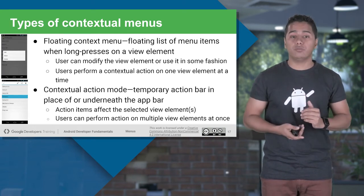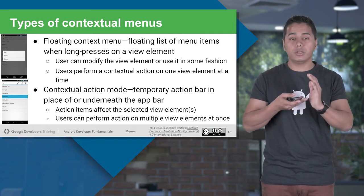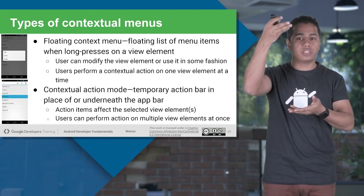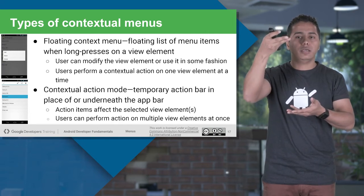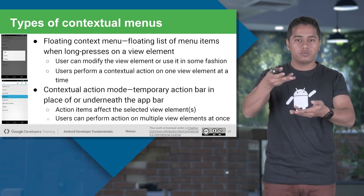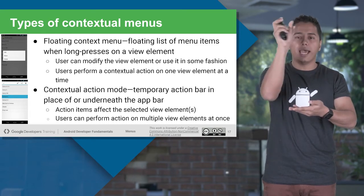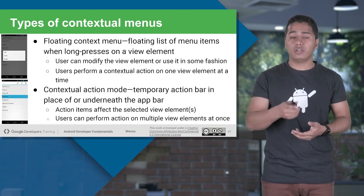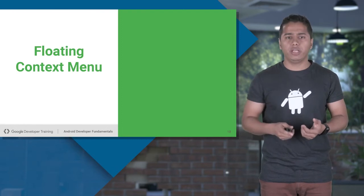What about contextual action mode? Contextual action mode also comes when you long-click on any view, but it actually hides the action bar or app bar temporarily. Instead of showing a floating context menu, the menus are shown at the top of the action bar. We'll discuss contextual action mode more when we reach it. For now, let's see how exactly we can create the floating context menu first.